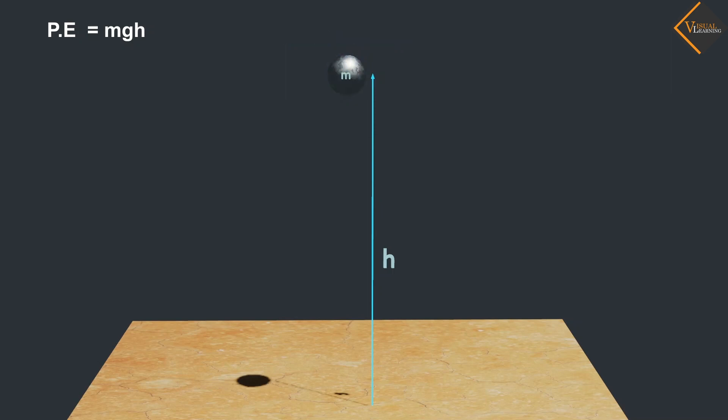Here, the ball has no motion at the moment so the velocity of the ball must be zero. Hence, kinetic energy is equal to zero. At this point, the sum of kinetic energy and potential energy will be equal to mgh.